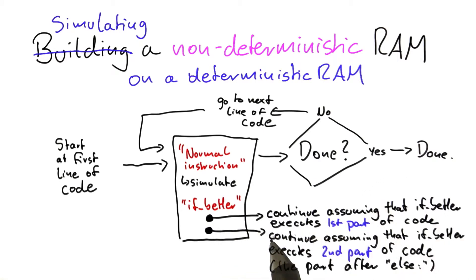One simulation makes this assumption here. The other one makes this assumption down here. And if you now encounter the if better statement a second time, then again, you will have to branch into two possibilities up here. And the same thing down here.